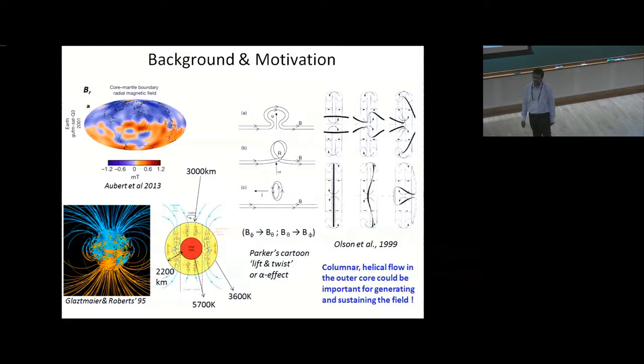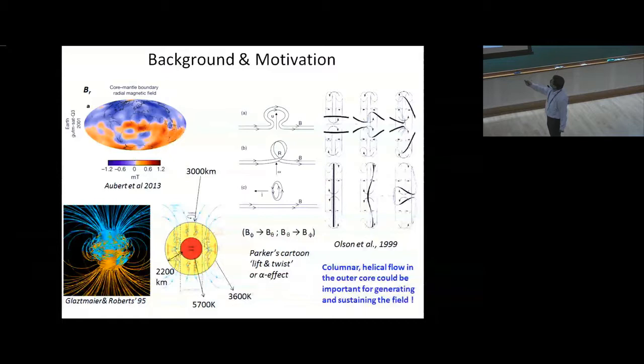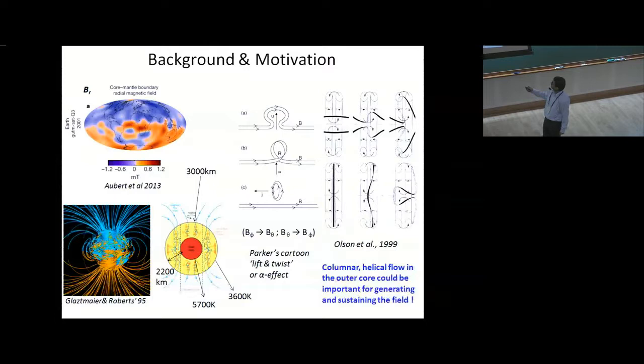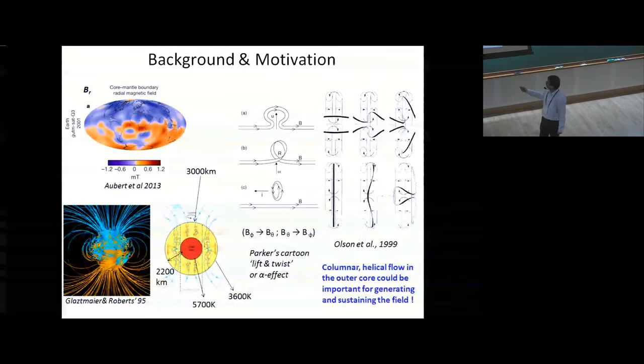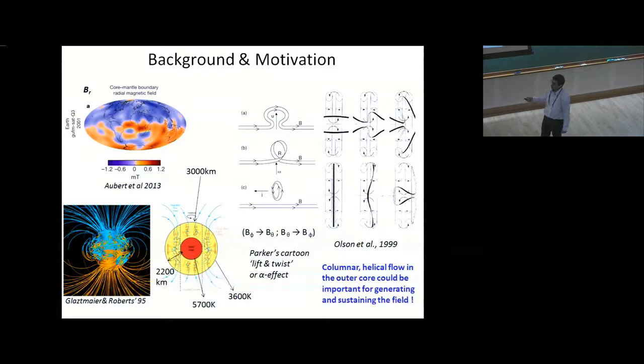One model to explain this magnetic field is called the alpha effect. If you start with a B-phi toroidal field line and have a helical flow — where velocity U and vorticity omega are parallel — that can twist the field lines. Starting with B-phi, you twist the field lines, they detach, and that creates another component of the magnetic field. You first need an antiparallel current, and that current from Ampere's law should give a B-theta. The same process can repeat and bring you back to B-phi — a self-sustaining cycle.